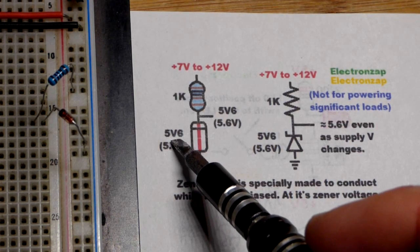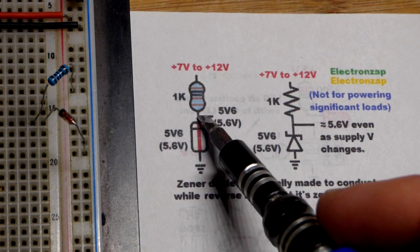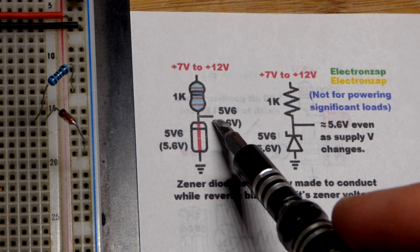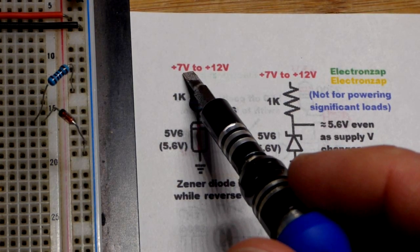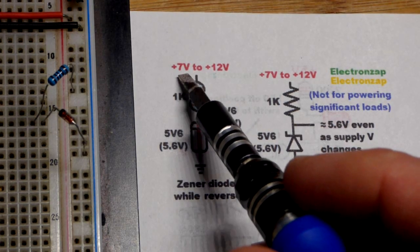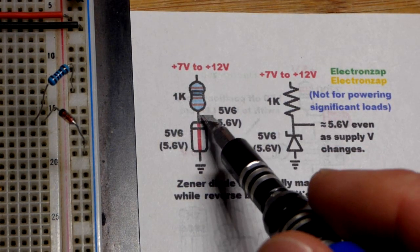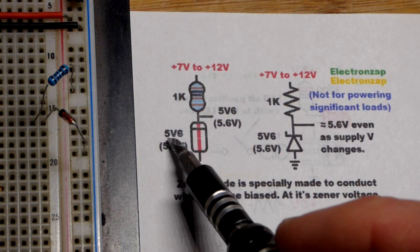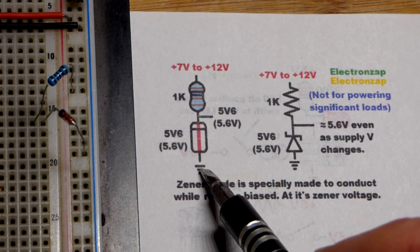When you use it reverse biased, the Zener diode has a Zener voltage — that's the voltage that builds up across it while current is flowing through it, and you can output that voltage. You can power small loads at that voltage, which is lower than the supply voltage. You want the supply voltage at least a couple volts higher. At 7 volts, with nearly 6 volts across the diode, you're probably only going to get about 1 milliamp of current through the Zener diode.